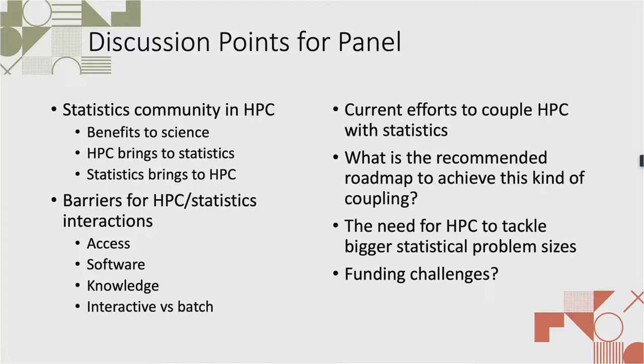I was really interested to hear Ryo's comment about generating synthetic images, because there are nice statistical applications where you generate datasets and train the network on that. I would argue both of these help with the generalization issue because you're actually controlling the design of the training rather than using happenstance images or just a partial space of what you're trying to generalize from. Synthetic data generation is a hot topic.